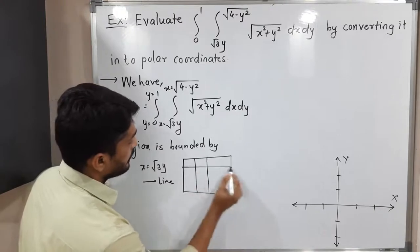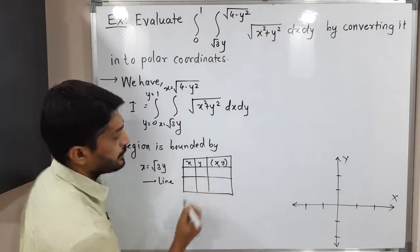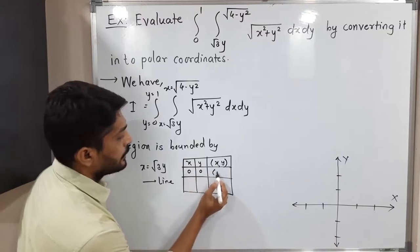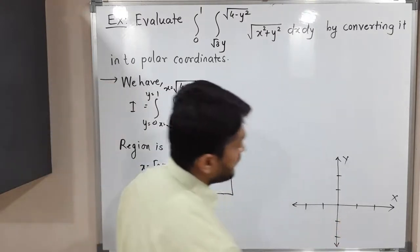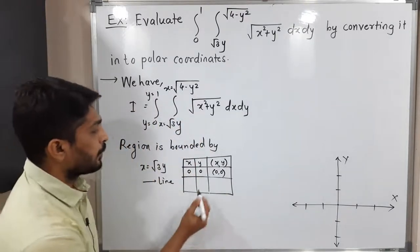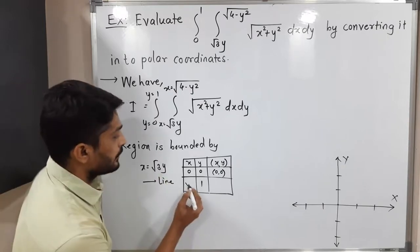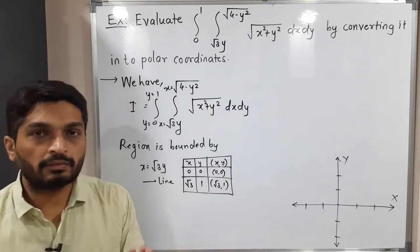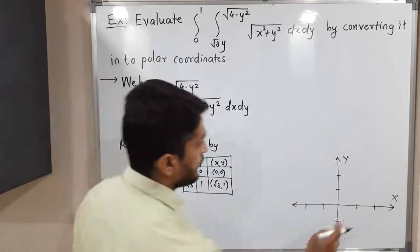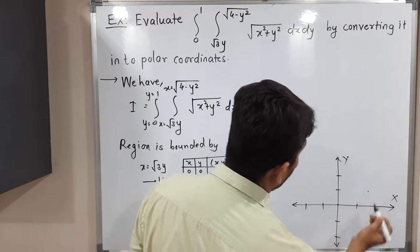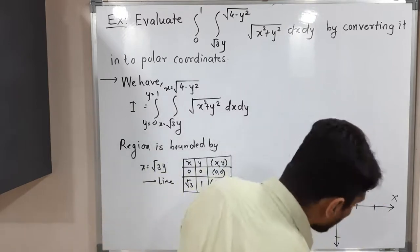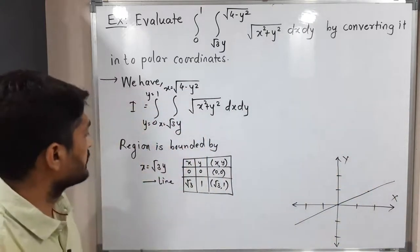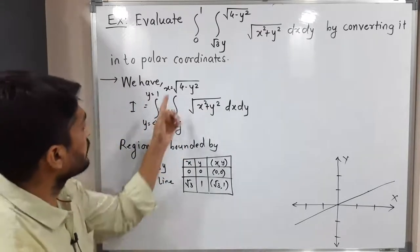For the first curve, x = √3y, the power of x is one and the power of y is one, so it represents a straight line. To draw it, we find two points. Putting y = 0 gives x = 0, so the point is (0, 0). Putting y = 1 gives x = √3, so the point is (√3, 1). We draw a line through these two points.